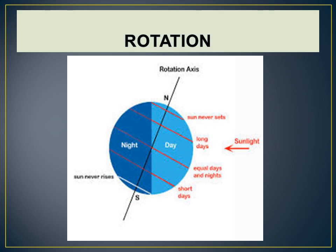Earth's axis is tilted — it is not straight, it is a bit tilted — at an angle of 23.5 degrees. There is another imaginary line that runs around the center of the earth at an angle of 90 degrees to the axis; it is known as the equator. It divides the earth into two equal halves. The half that contains the north pole is called the northern hemisphere, and the half that contains the south pole is called the southern hemisphere.